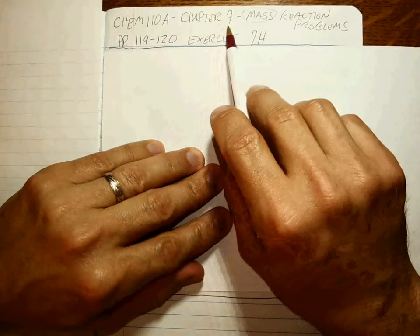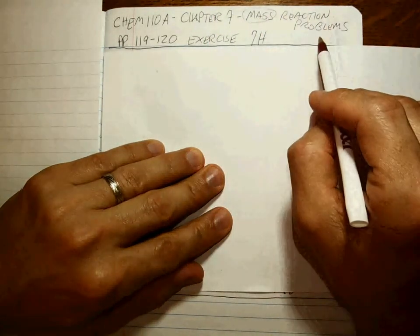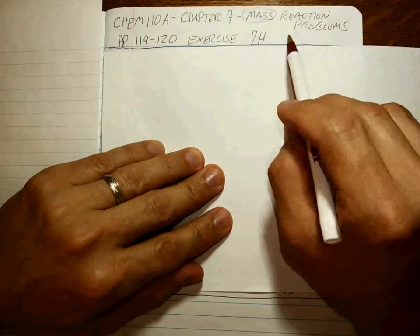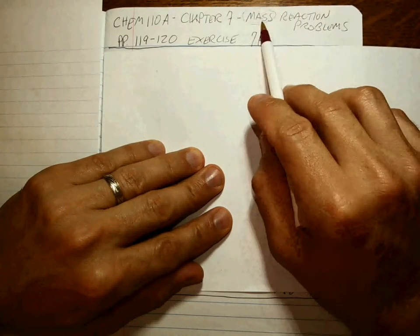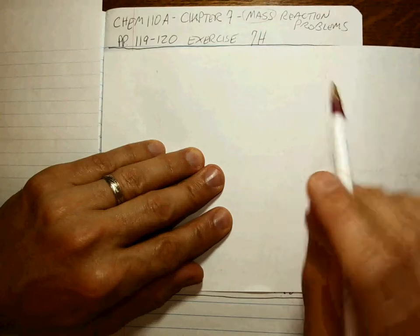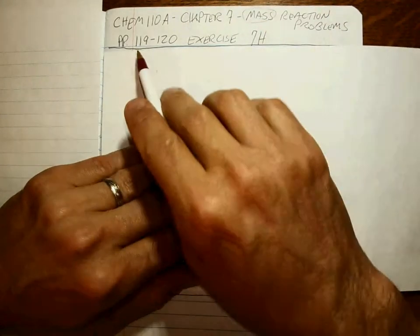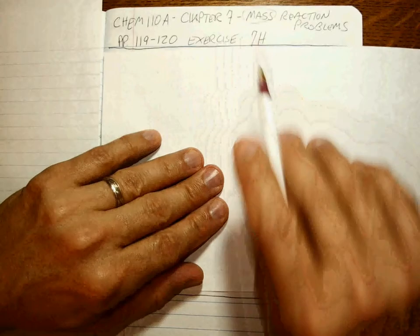Okay, we're back at it on Chapter 7. We're doing reaction problems, but this time instead of just moles and then the mole-to-mole ratio, we're using mass and then dealing with the mole-to-mole ratio. This is on pages 119 and 120, Exercise 7H.